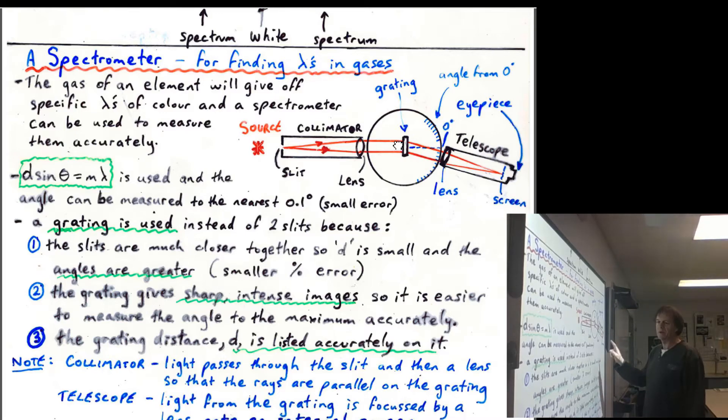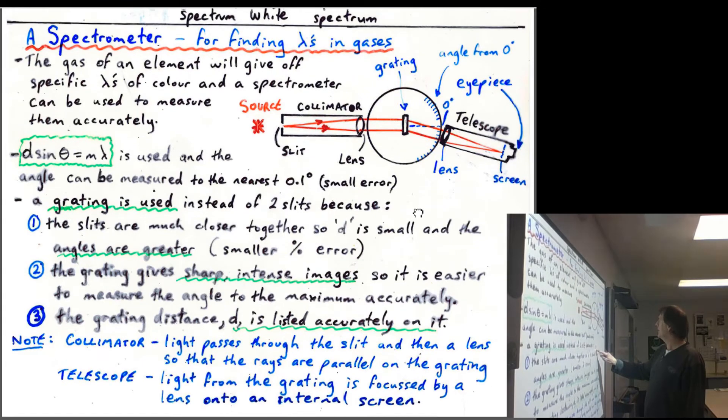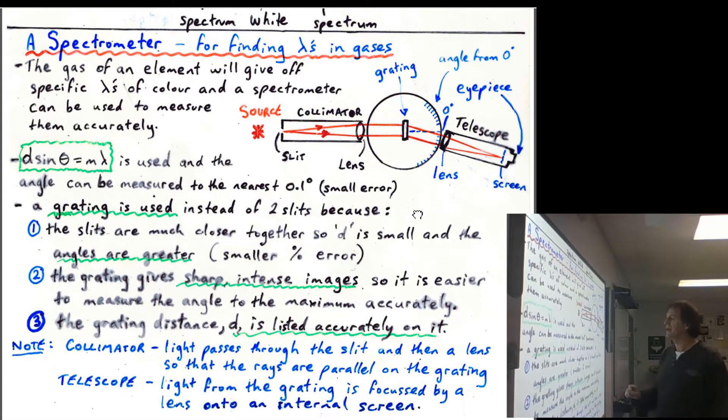They'll come through here, you focus onto a screen then, and you'll get your multiple slit interference pattern there. So because you've got these slits being close together and you're getting over a much larger set of angles, it's much easier to get less percentage errors in this.